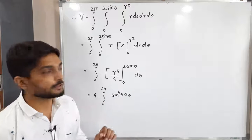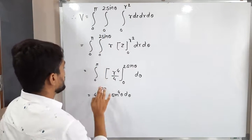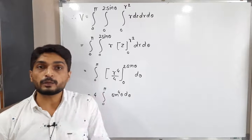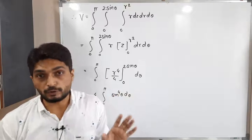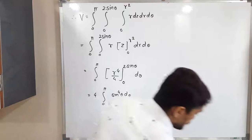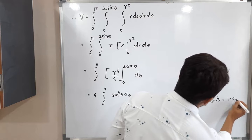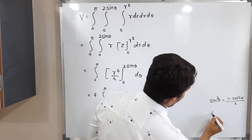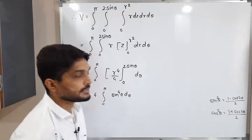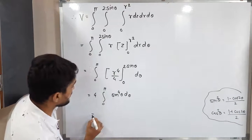The limits are 0 to π, not 0 to π/2, so we cannot directly use the beta-gamma function. We need to use trigonometric identities. We know that sin²θ = (1 − cos 2θ)/2 and cos²θ = (1 + cos 2θ)/2. The first formula is applicable here, so we write sin⁴θ = [(1 − cos 2θ)/2]².